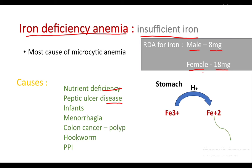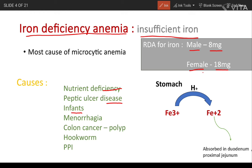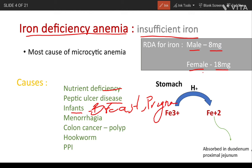In infants who are totally dependent on breastfeeding, we also observe iron deficiency anemia. We also see it in pregnant women. In menorrhagia conditions, we also see it, as there is excessive blood loss. In colon cancer, polyps, or parasites like Ancylostoma duodenale — which is present in our duodenum — iron absorption is also prevented.